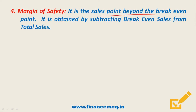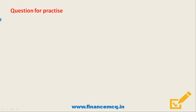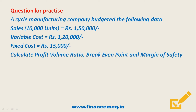The next tool is Margin of Safety. Margin of Safety is the sales beyond the breakeven point, obtained by subtracting breakeven sales from total sales. The formula is: Total Sales minus Breakeven Sales. We will now take a practical example for more clarity, using a cycle manufacturing company.